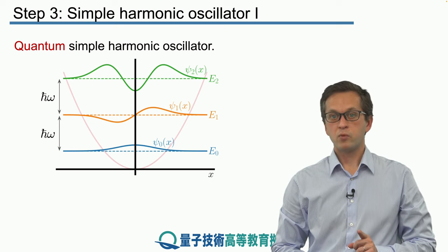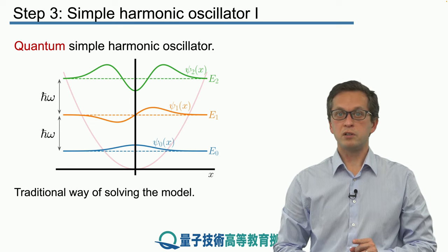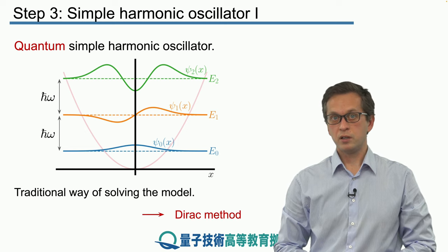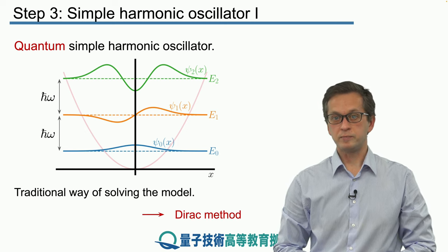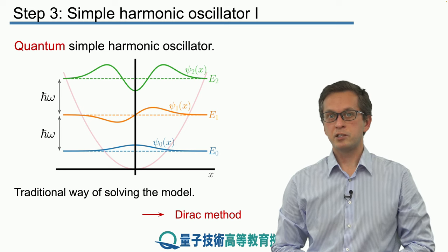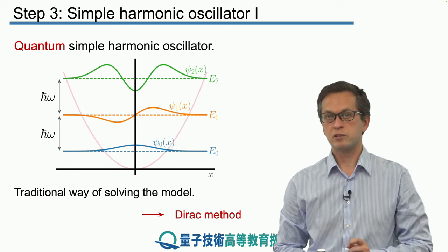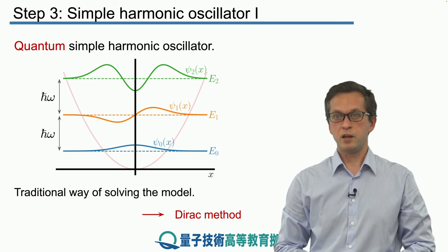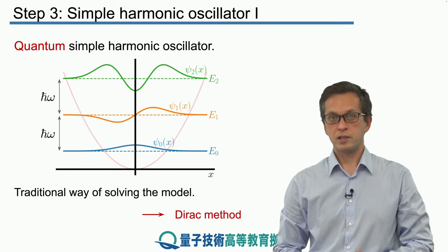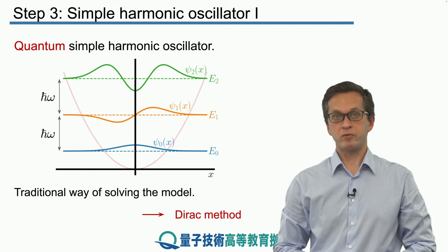In the next step, we are going to introduce the direct way of solving the harmonic oscillator. We will see that this method naturally lends itself for quantizing light as well and obtaining the solutions for quantized electromagnetic radiation. So let's see how that works in step four.